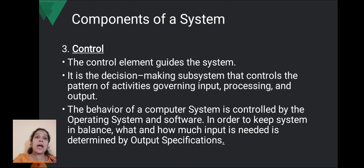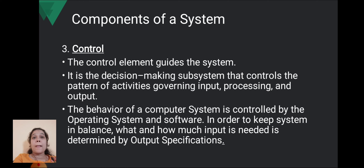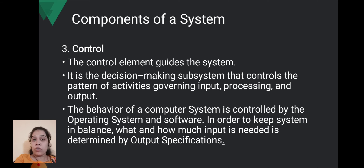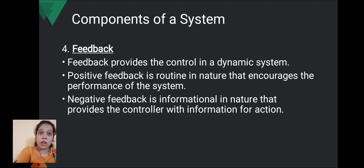Third is control. The control element guides the system — it checks whether all the system components are working properly. It is the decision-making subsystem that controls the pattern of activities governing input, processing, and output. The behavior of a computer system is controlled by the operating system and software in order to keep the system in balance. What and how much input is needed is determined by the output specifications — this is decided by the control element.